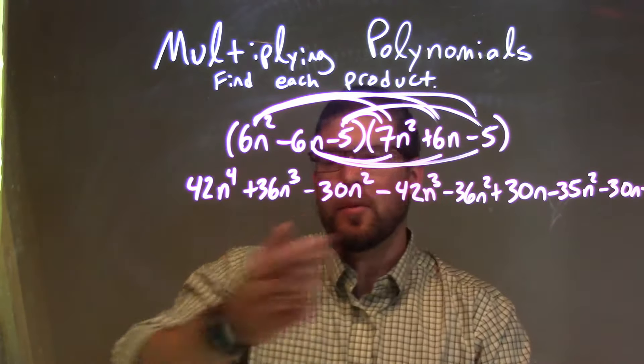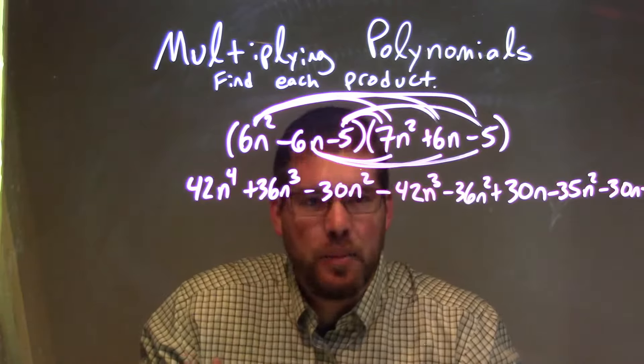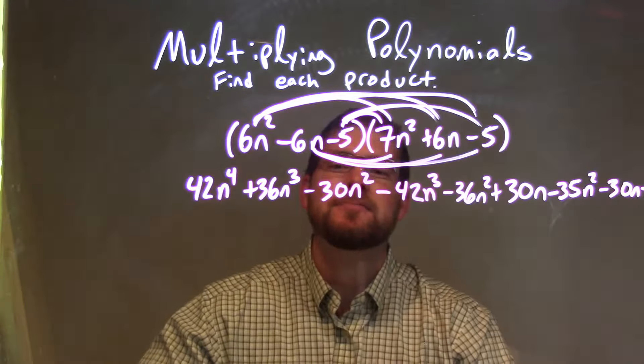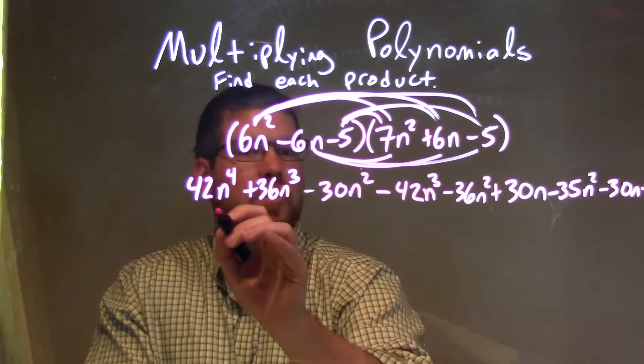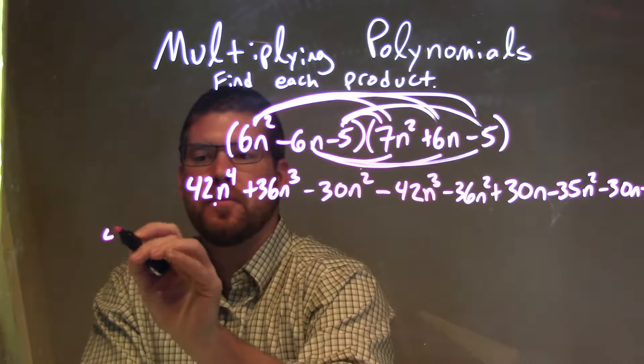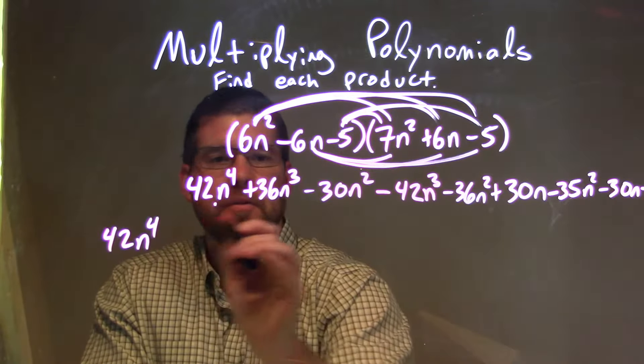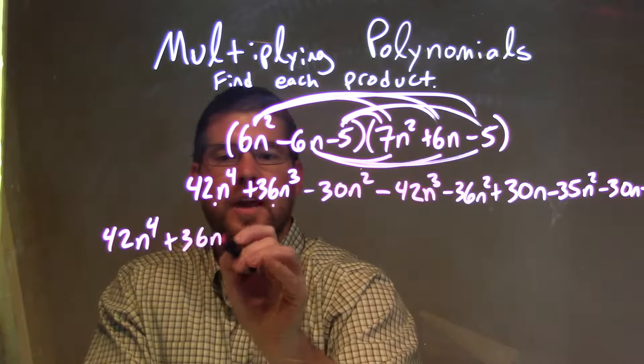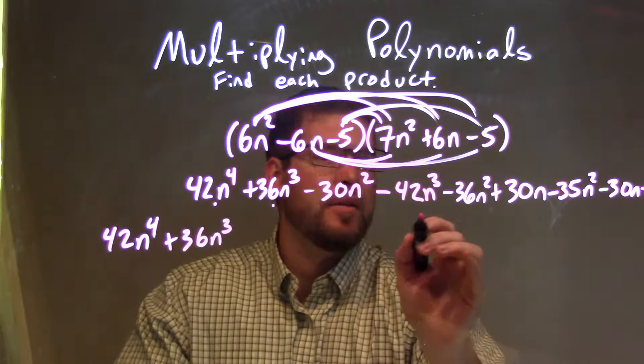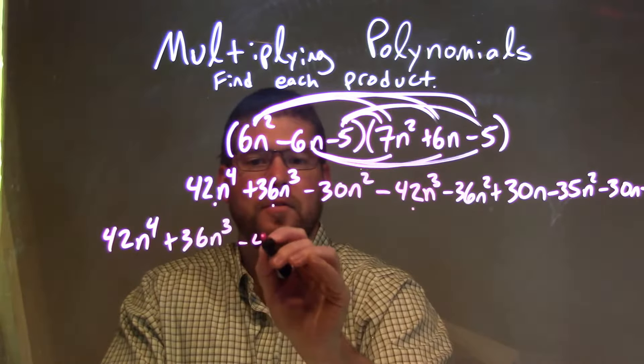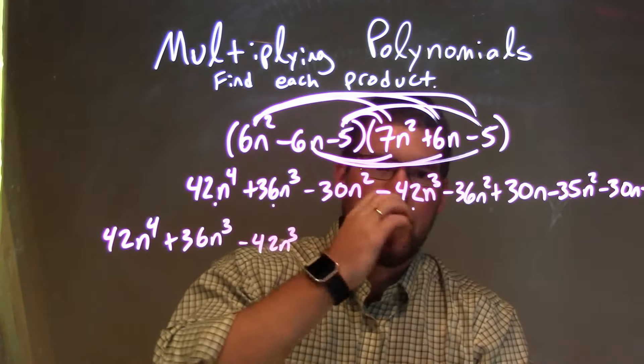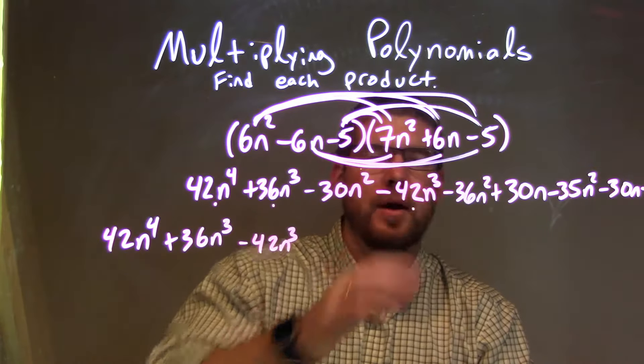Let's go rewrite this, and we'll rewrite with a little more space here, and rearrange it so our like terms are next to each other. So our highest degree is first, like terms are next to each other. Highest degree is to the fourth power, so we have 42n to the fourth. Then next highest degree is the third power, so we have a plus 36n to the third. And the other n to the third I see is a minus 42n to the third. And again, I put dots there to show that I brought that down. I don't see anything else.